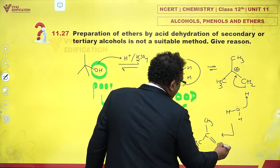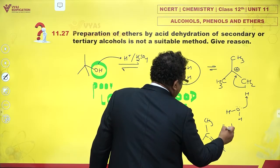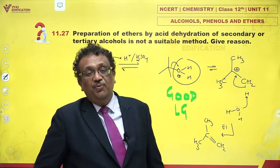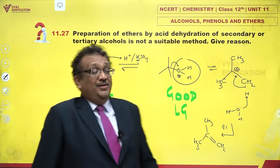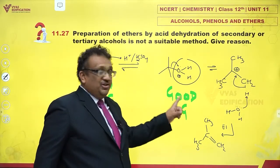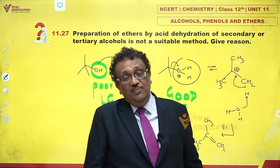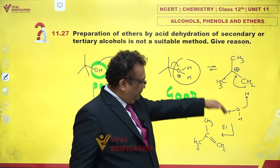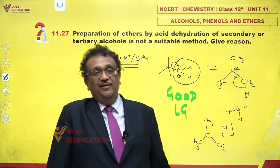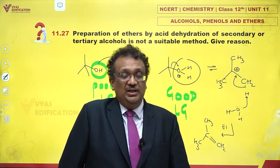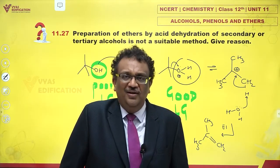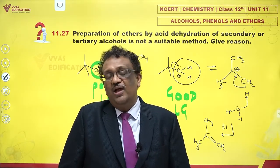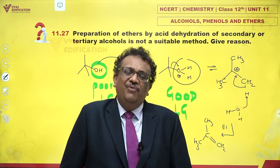You start getting alkene. This is called elimination. But we wanted ether — that is the problem. Secondary and tertiary carbocations are reasonably stable, especially tertiary, so invariably you will be pushed in the direction of getting an alkene. It's not that you get 100% alkene, but you get enough of it. It's a useless byproduct that spoils your reaction efficiency.